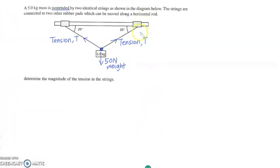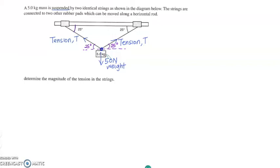The tension T is in a particular direction, and we know that this angle is 25°, which means the angle on the left side is also 25°, because it is alternate to the angle between the string and the ceiling or horizontal rod. The tension T is at an angle and the weight is vertical, which means it is the vertical part of the tension that is actually supporting the weight. The horizontal part is not the part supporting the weight.